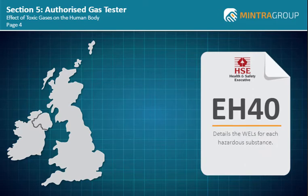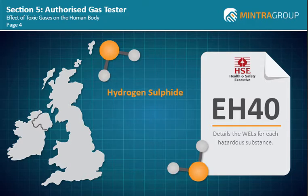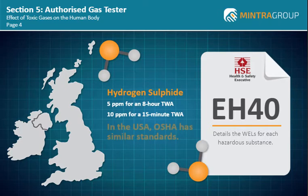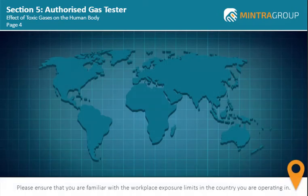Where workers are exposed to toxic gases, these must be monitored. For example, the WEL for hydrogen sulfide is 5 ppm for an eight-hour TWA and 10 ppm for a 15-minute TWA. In the USA, OSHA has similar standards. Please ensure that you are familiar with the workplace exposure limits in the country you are operating in.